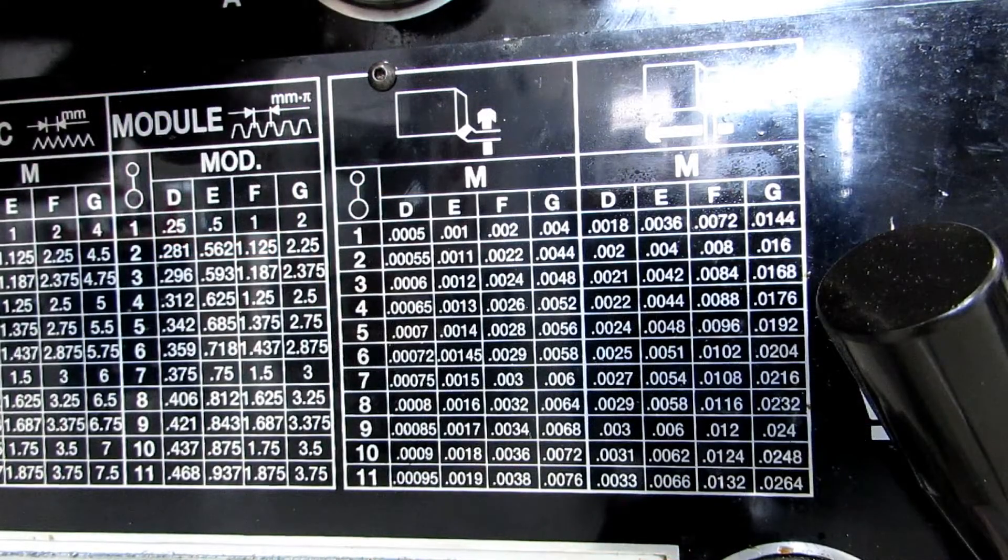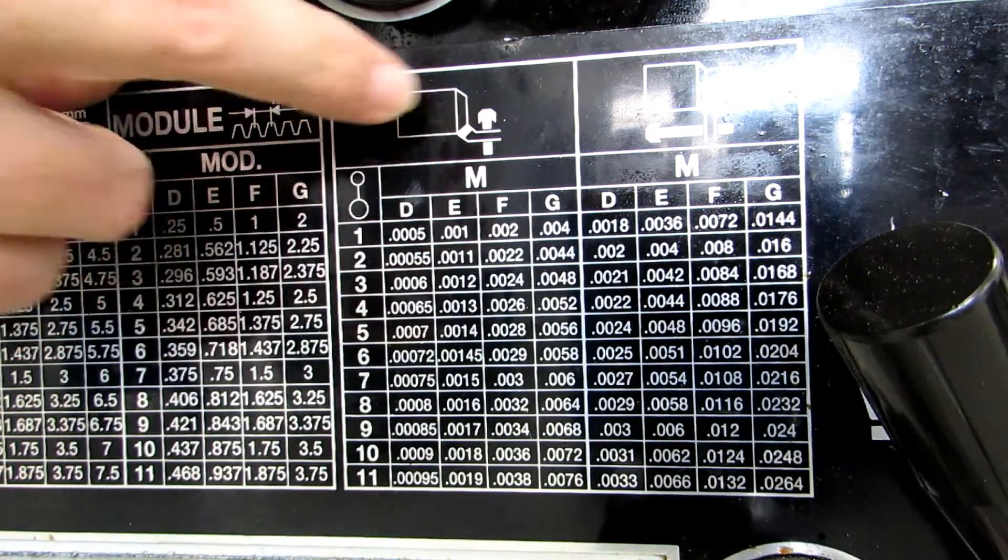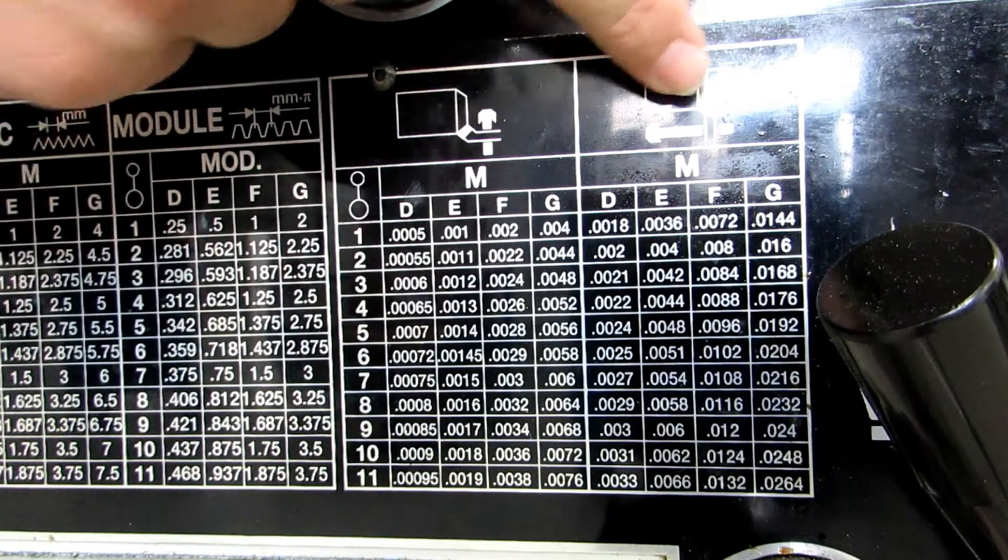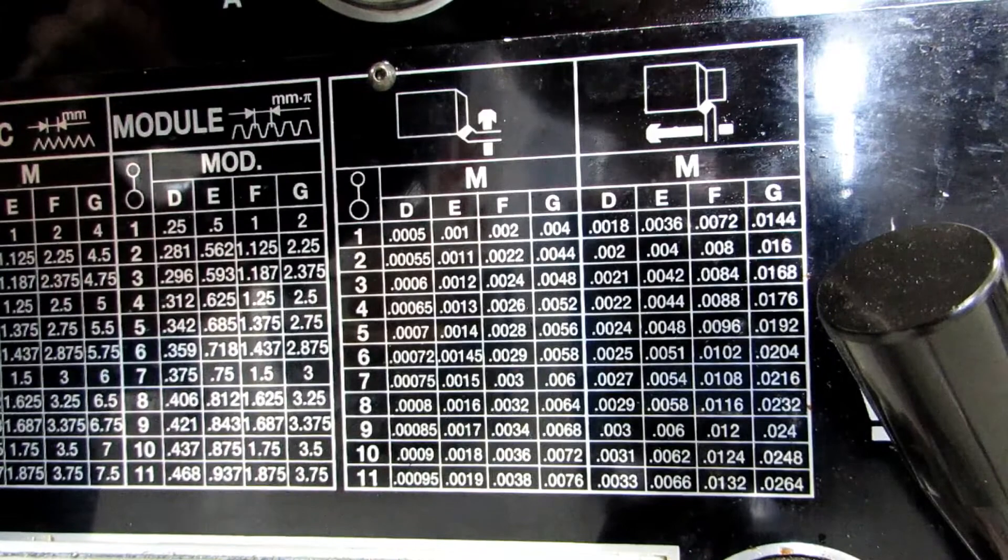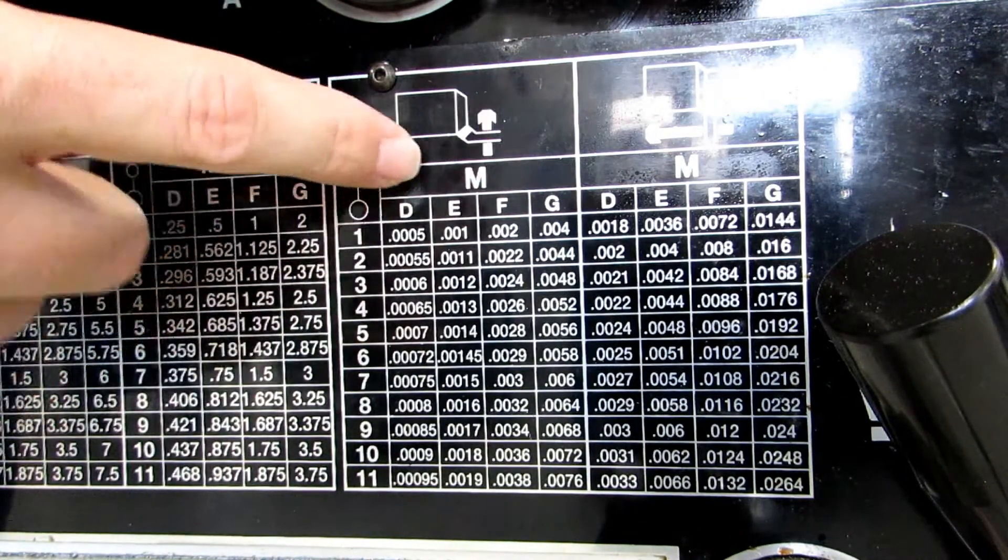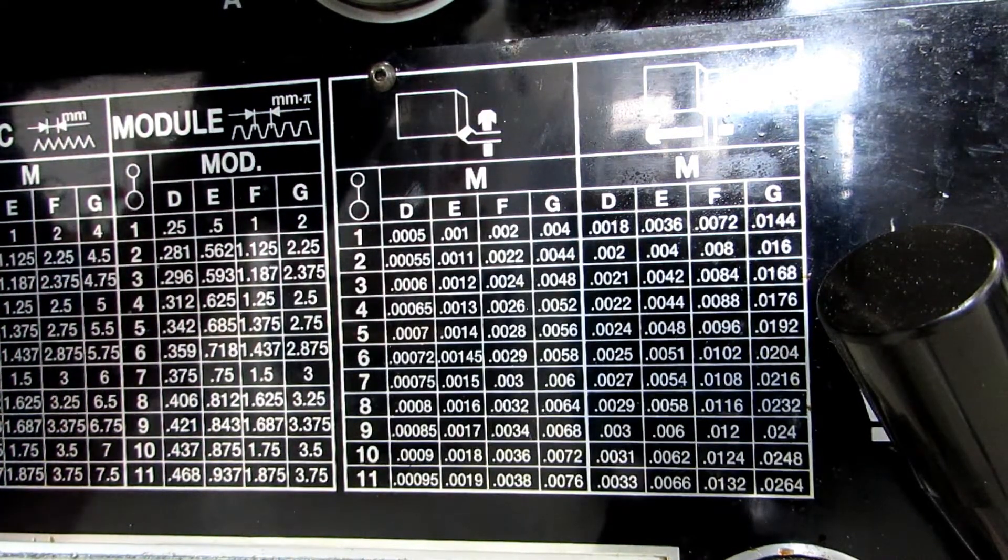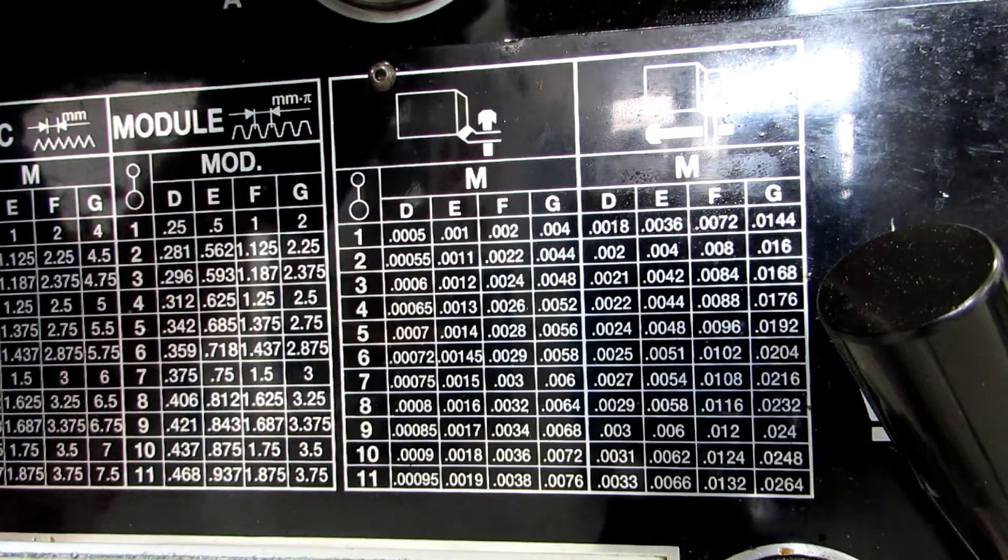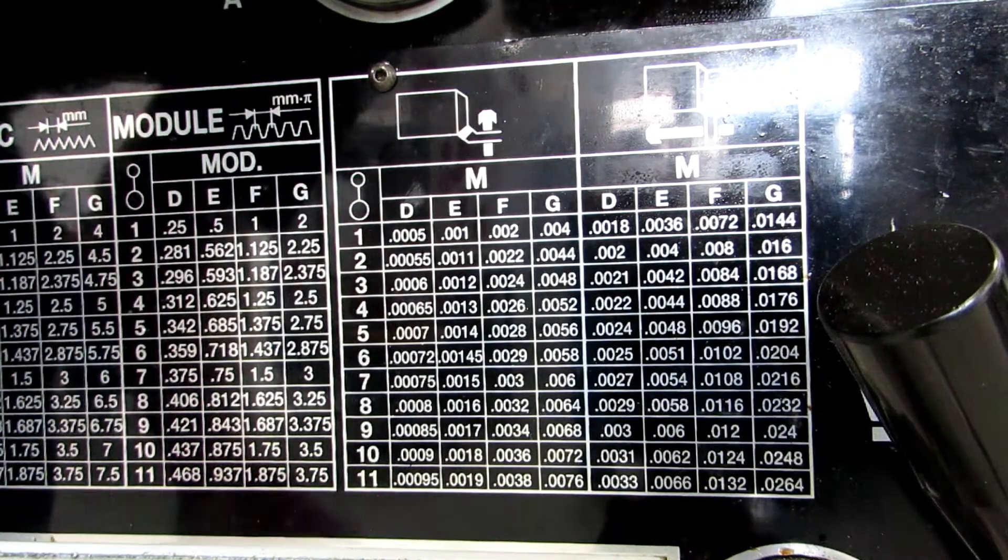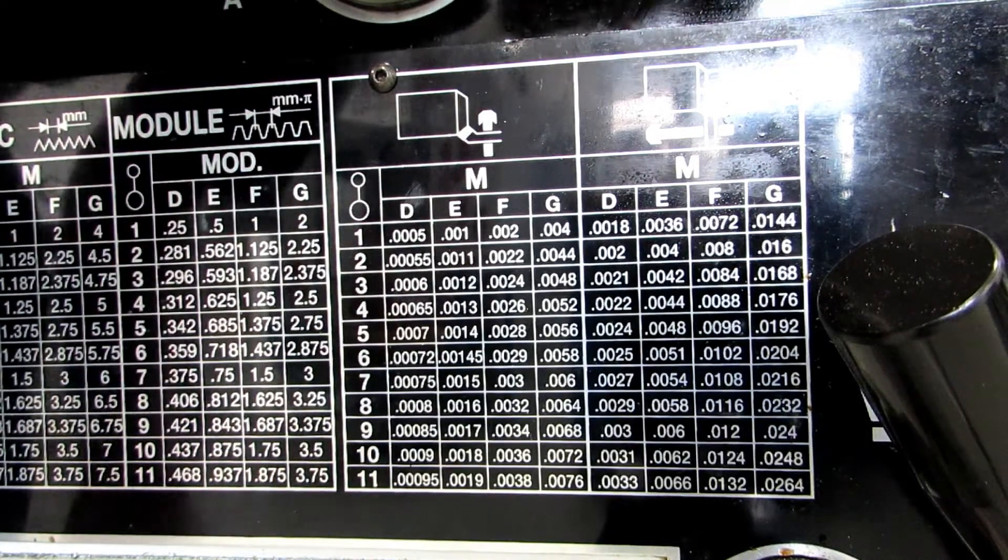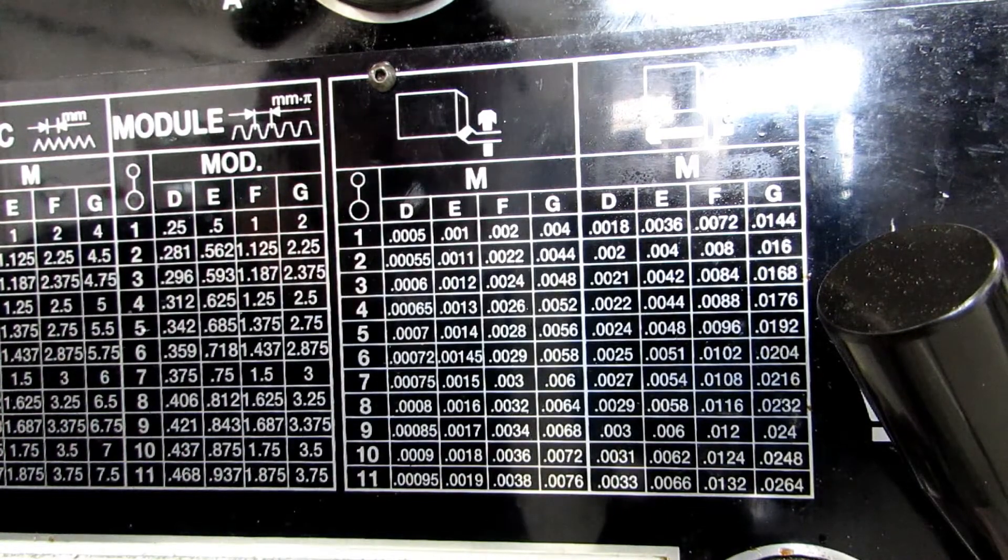So, here's a close-up of the feed chart for power feed. And again, this chart here with the arrow moving across the part is for cross feed. And then this chart here with the arrow moving along the part is for longitudinal feed. You've got separate settings for each one, and this is a bit of a rarity on lathes. Usually, they only give you the longitudinal feed rates, and then they'll give you a key that tells you that the cross feed rates are half of longitudinal or a quarter of longitudinal. So, this is actually kind of nice, although it can be confusing for people who are new to the machine.